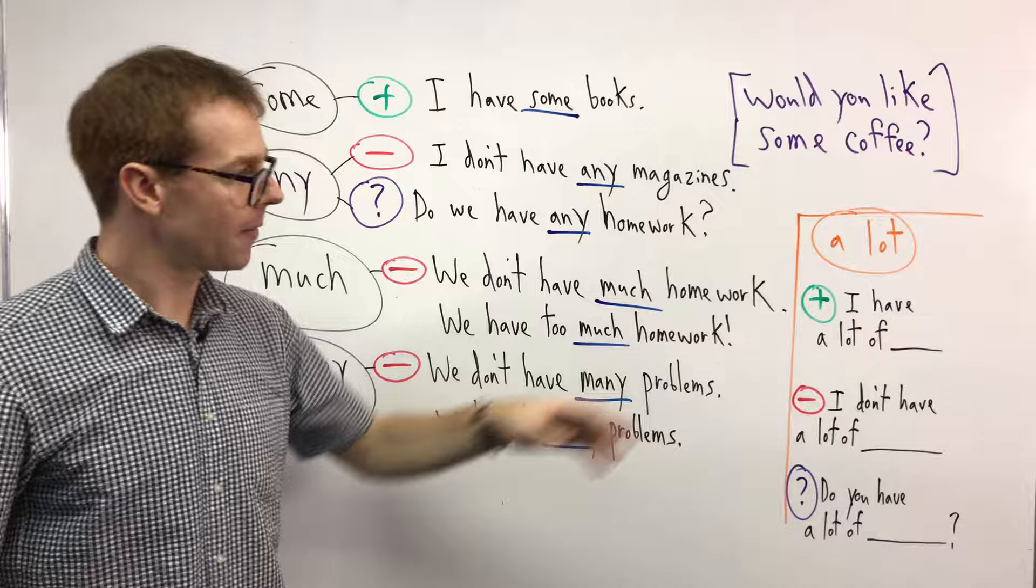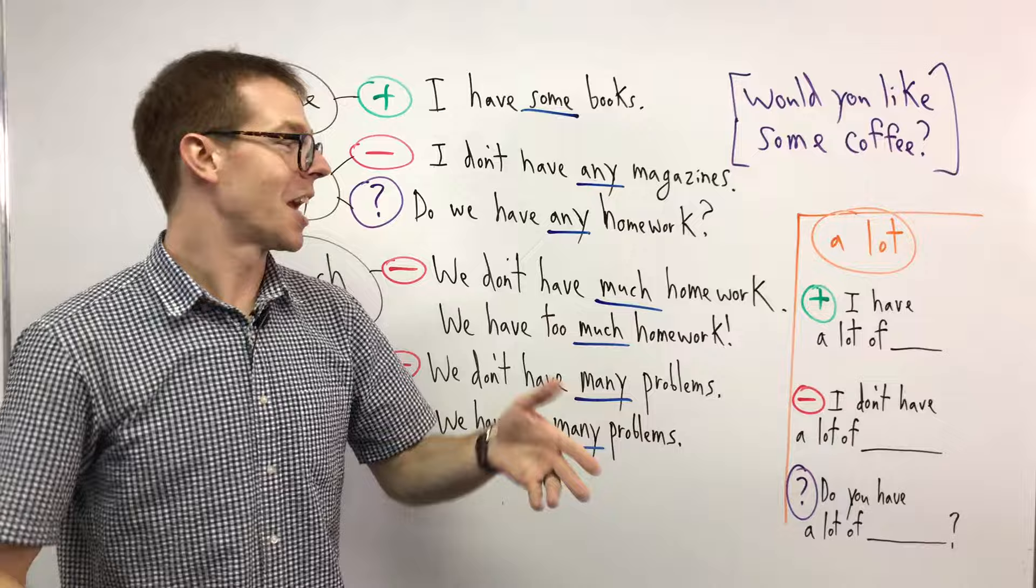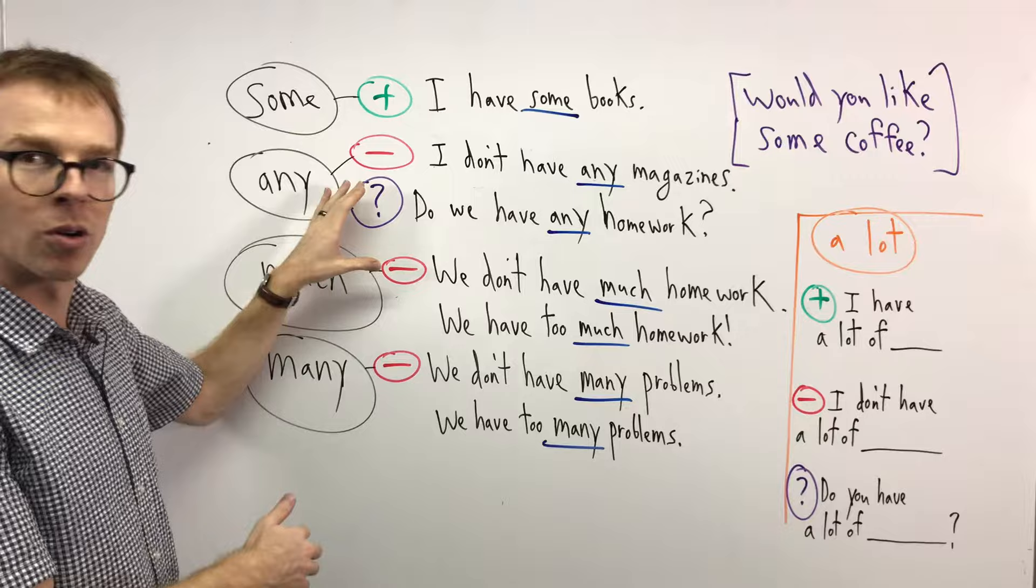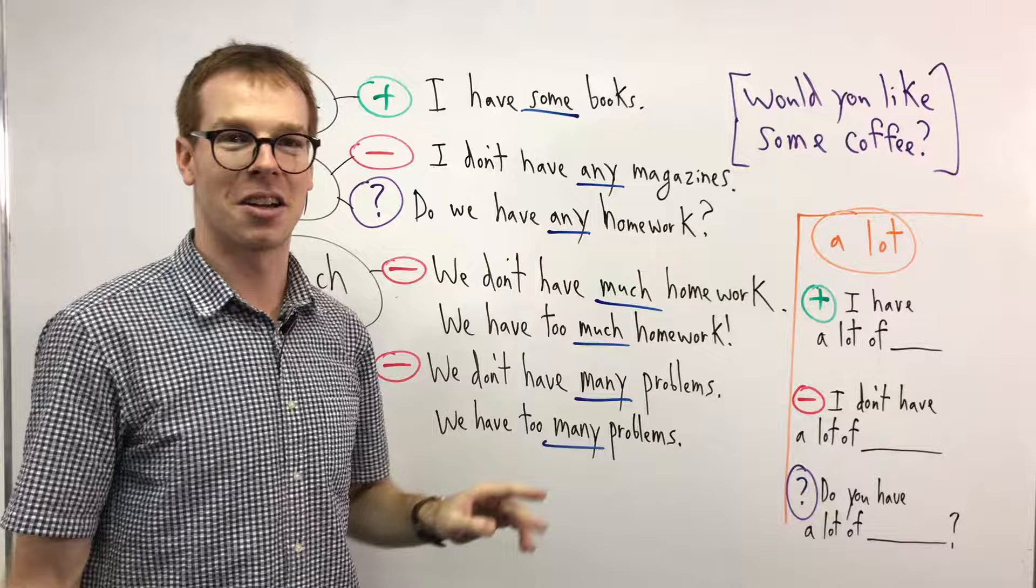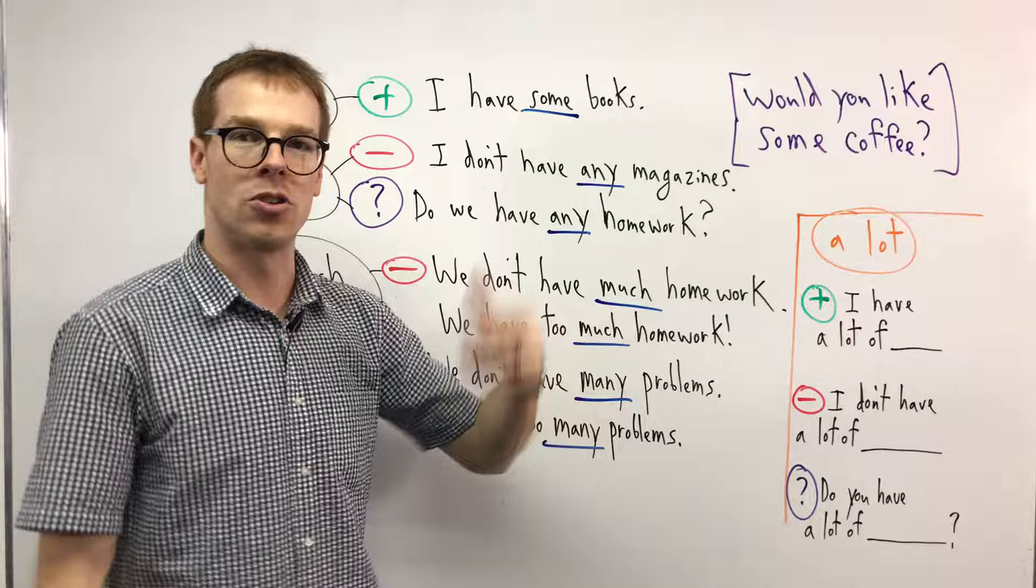Last part right here, we have 'a lot'. Now a lot can be very useful because we don't have to worry as much about if it's positive or negative or question. We can use a lot for everything. I have a lot of cake. I have a lot of water. I have a lot of books. We don't have to worry if you count or don't count. Both okay.